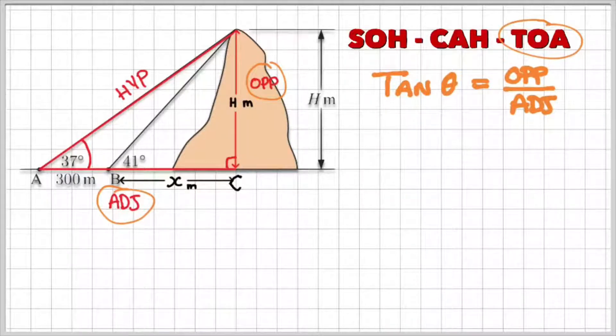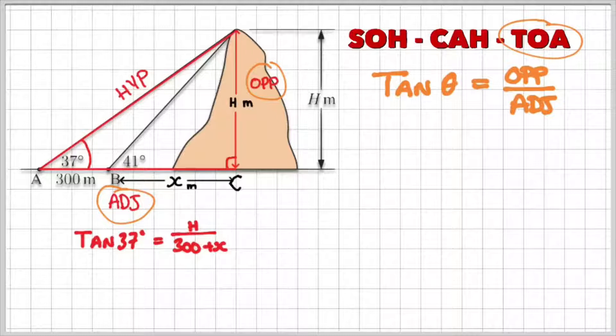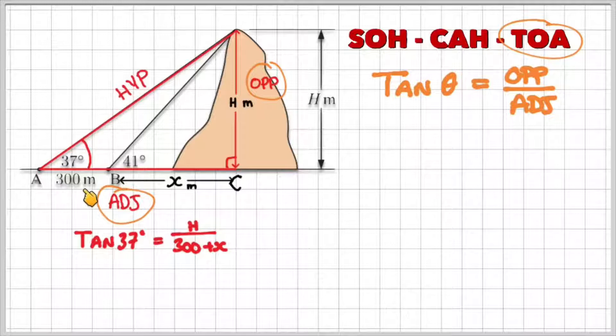The problem is I have two unknowns. I have h, which is the height of the mountain, and I've introduced x, which is the distance between B and C. So what I can do is I can say tan theta, or tan 37 in this case, is equal to the opposite, which is the height, divided by adjacent, which is 300 plus x. So that's equation one.